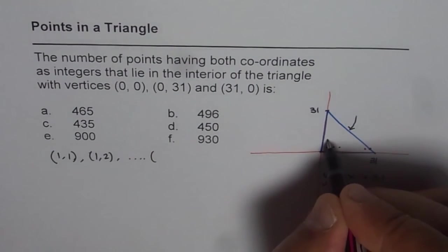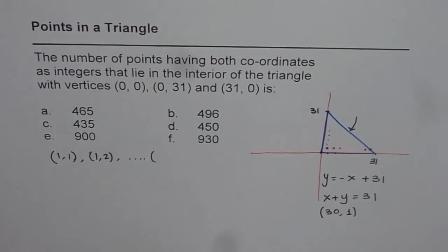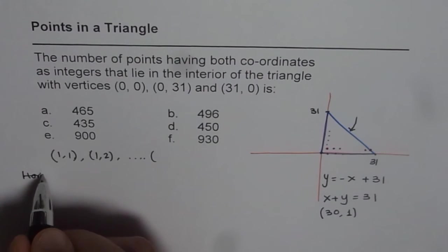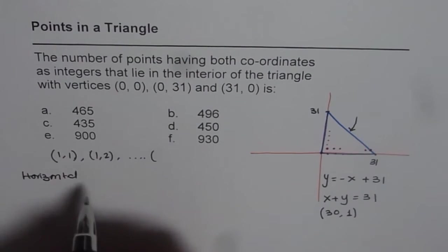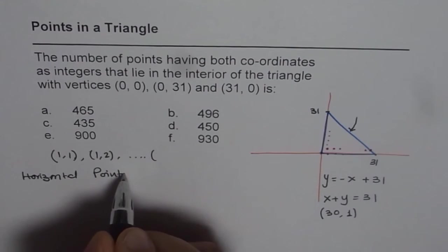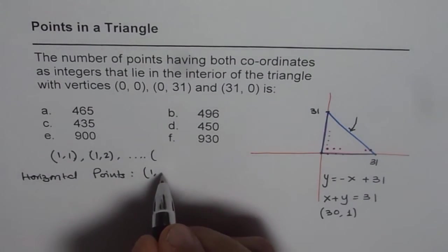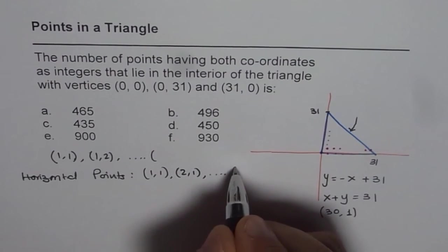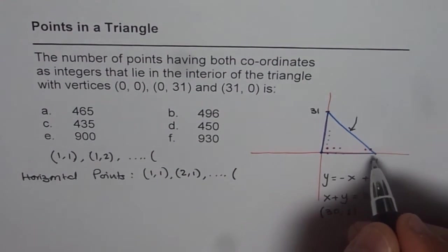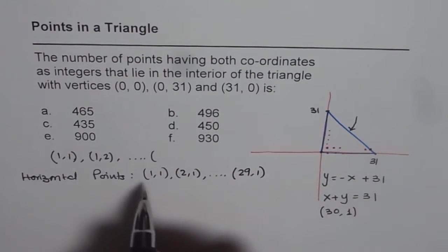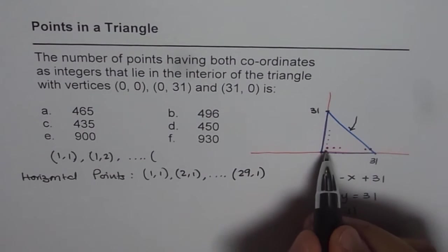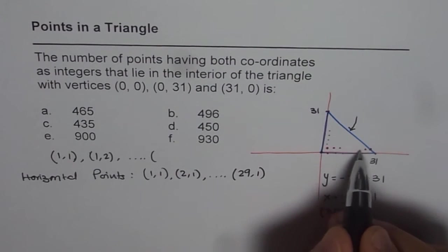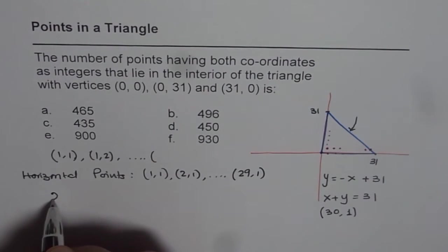If you go up like this, in that case those are the points. But let us see horizontal points first. So horizontal points will be (1,1) and then we will be having (2,1). Likewise until (30,1) will be on the triangle. We will consider (29,1). So that means we have 29 points in the first row or the bottom row of this triangle. So we have 29 points.